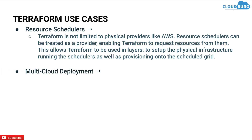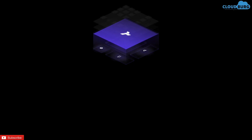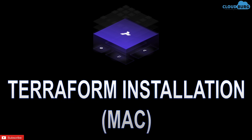Next use case is multi-cloud deployment. Terraform is cloud-agnostic and allows a single configuration to be used to manage multiple cloud providers and even handle cross-cloud dependencies. This simplifies management and orchestration, helping operators build large-scale multi-cloud infrastructure. You are not restricted to only one cloud provider like AWS — you can deploy on other cloud platforms like IBM, GCP, Azure, and many more.